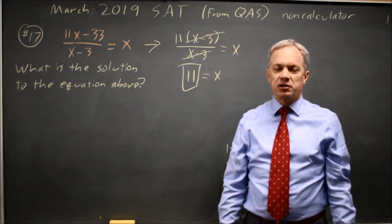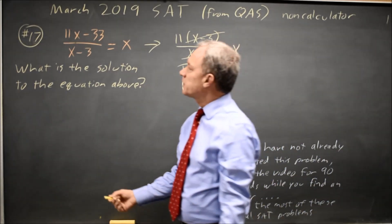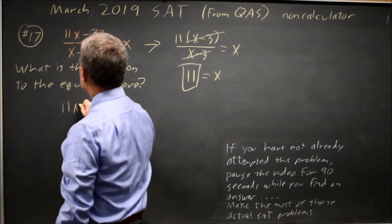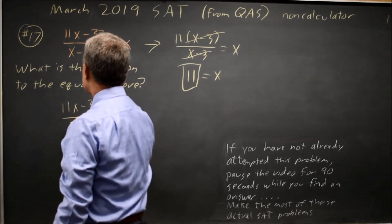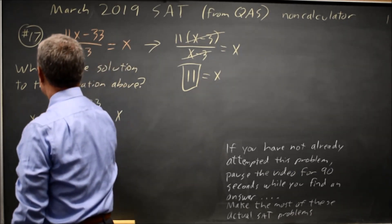In this case, I just had to factor out a common factor and recognize that's what I needed to do. If I did not recognize that, I could take 11x minus 33 over x minus 3 equals x, multiply both sides by x minus 3.